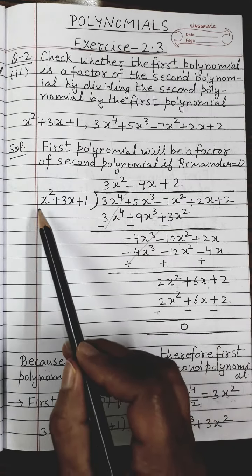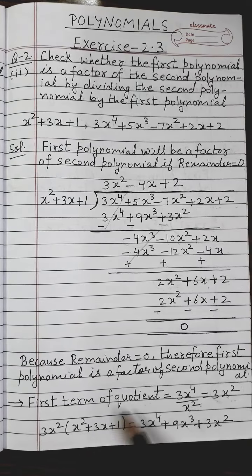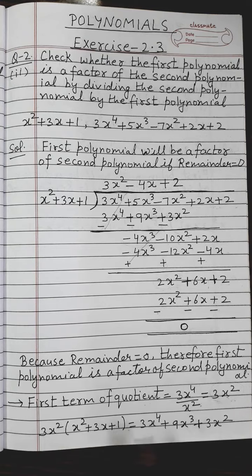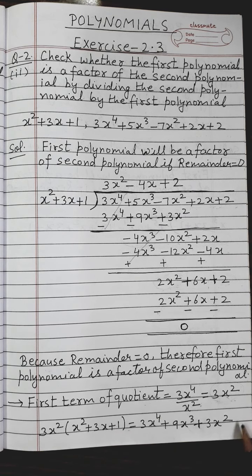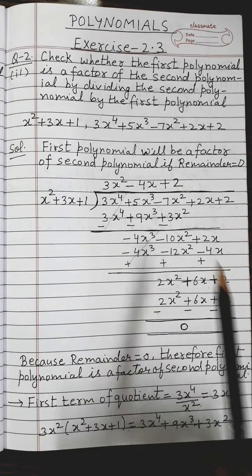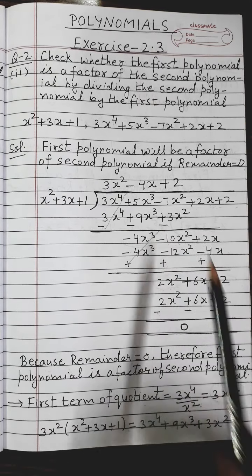Next I multiply 3x² with the divisor: 3x² × (x² + 3x + 1). Opening the bracket by the distributive law: 3x² × x² gives 3x⁴, plus 3x² × 3x gives +9x³, and 3x² × 1 gives +3x². I write this product — 3x⁴ + 9x³ + 3x² — below the terms of the dividend.